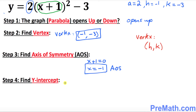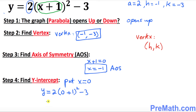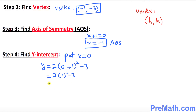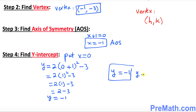In step 4 we want to figure out the y-intercept. For y-intercept we must put x equal to 0 and plug it into our original equation. So y equals 2 times (0 plus 1) squared minus 3. That gives us 2 times 1 squared minus 3, which is 2 times 1 minus 3, which is 2 minus 3, which equals negative 1. So y equals negative 1 is our y-intercept.